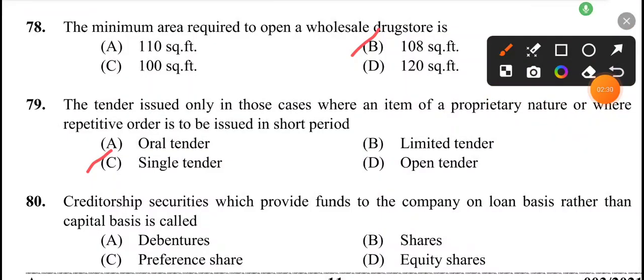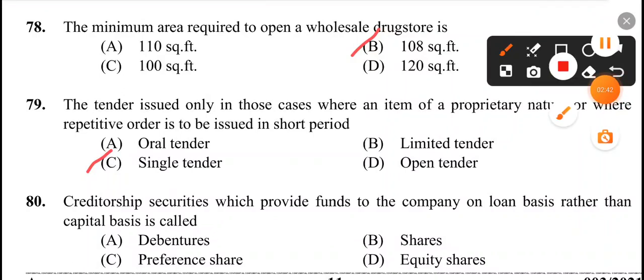Today's last question: creditorship securities which provide funds to the company on loan basis rather than capital basis is called. The answer is debentures, that is option A.